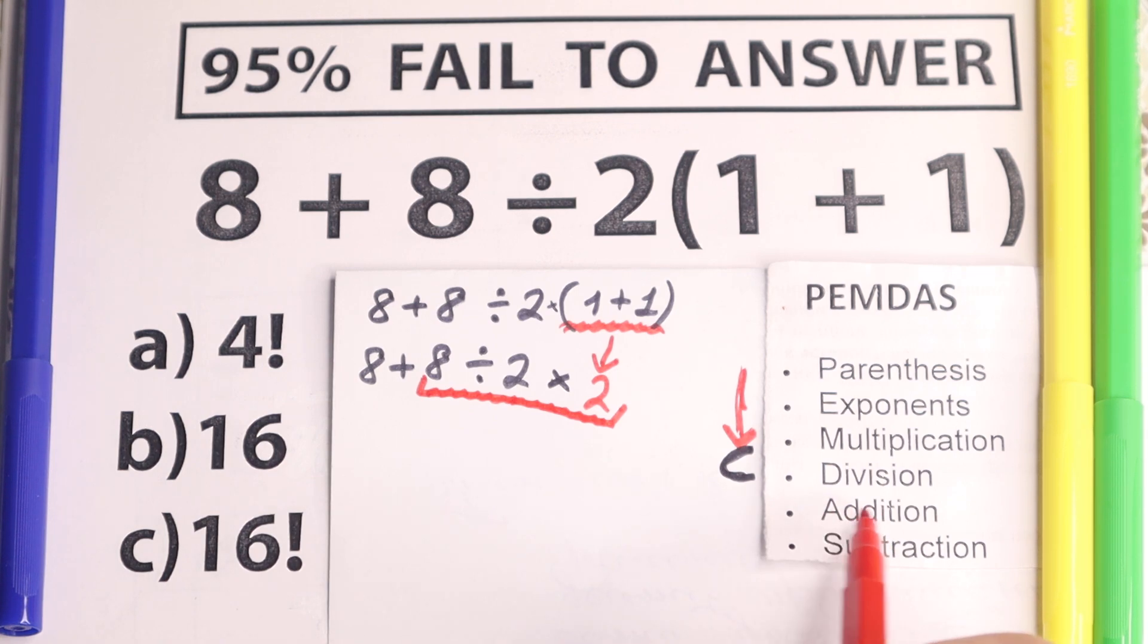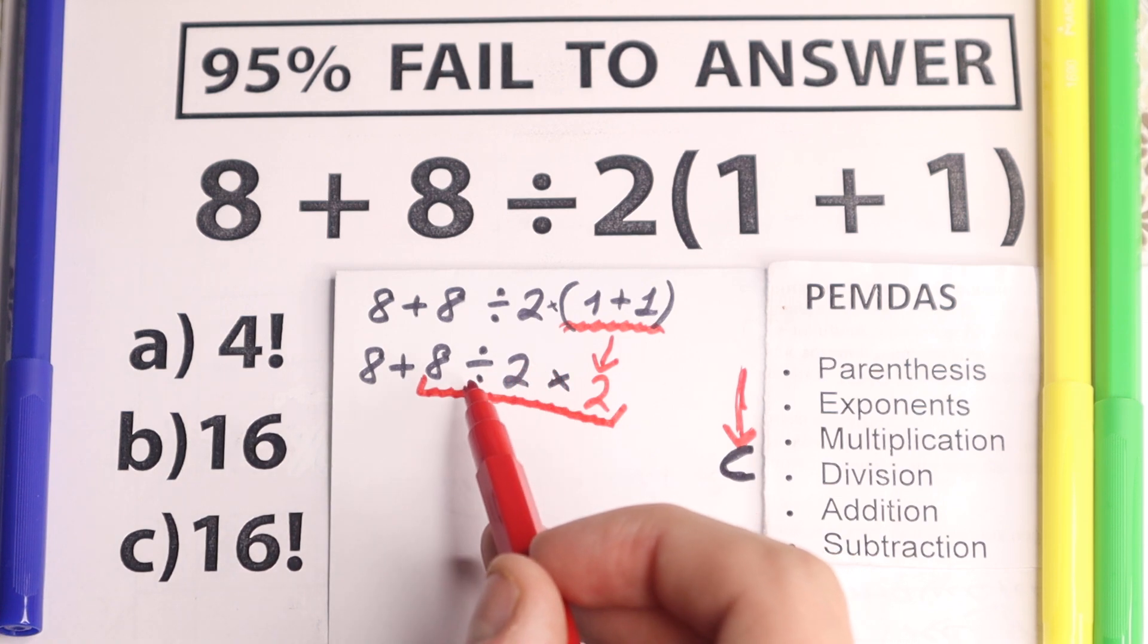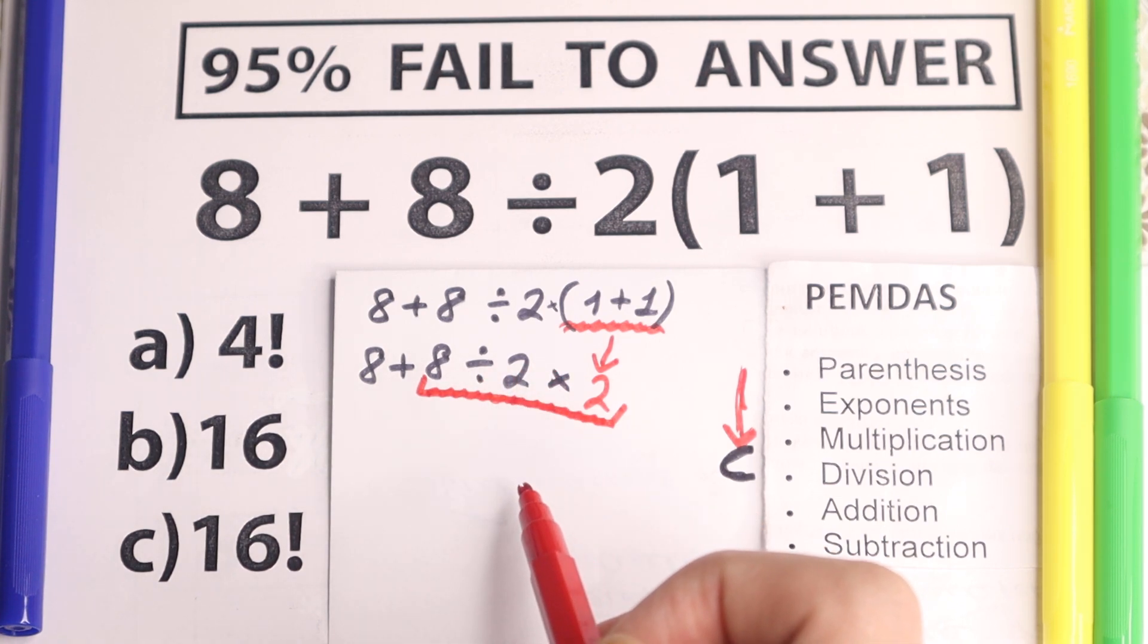Addition we go, as you can see, later. Before addition we need to solve this expression. But do we do multiplication first then division, or division then multiplication? This is the question.